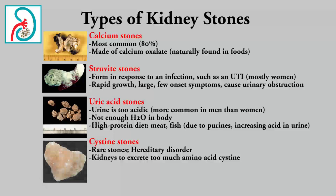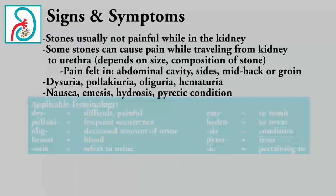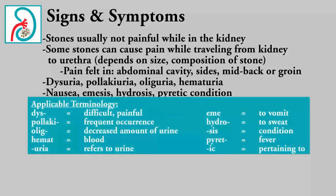Lastly, there are cystine stones, which is a hereditary disorder. They're very rare, and they occur when kidneys excrete too much of the amino acid cystine. While a stone is still in the kidney, it's usually not painful, but a stone can start to cause pain when it travels from the kidney to the urethra.